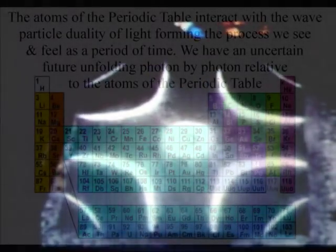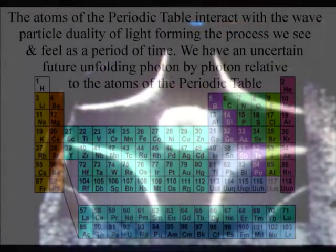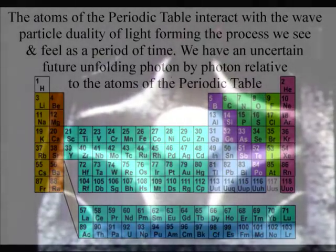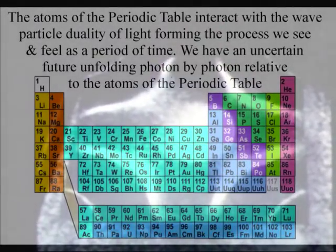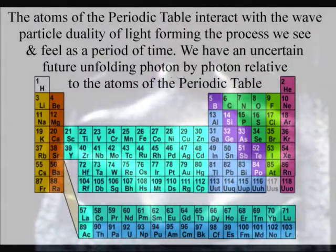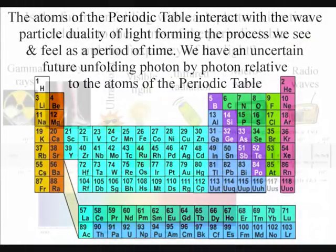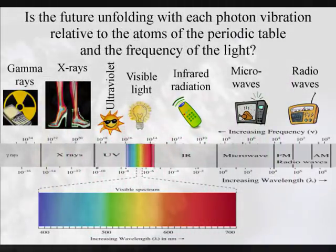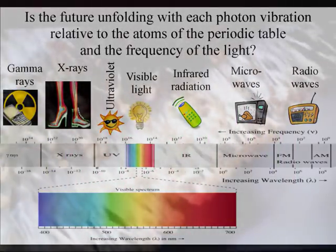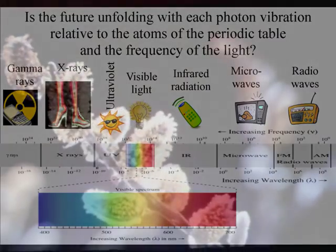In this theory the universe is a continuum with new vibrations continuously coming into existence photon by photon. The future is unfolding relative to the atoms of the periodic table and the frequency of the light. The atoms bond together and interact vibrating in unison to the frequency of the light.